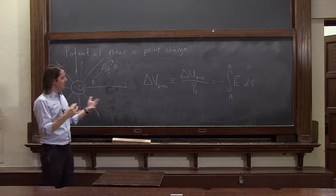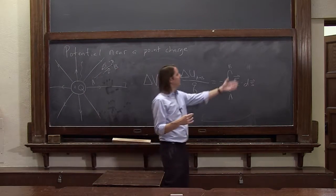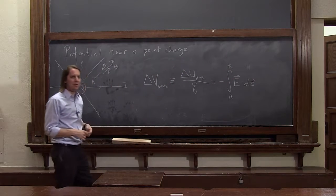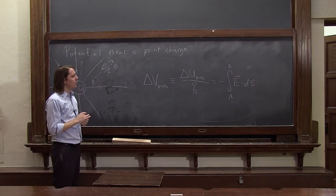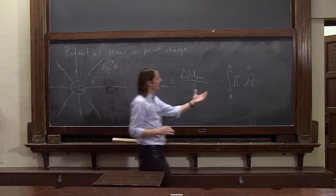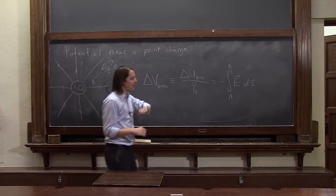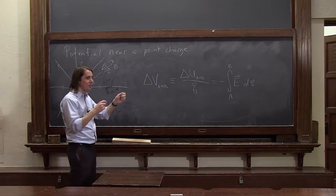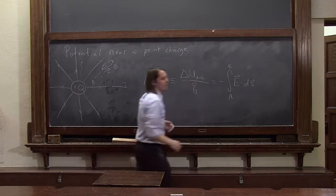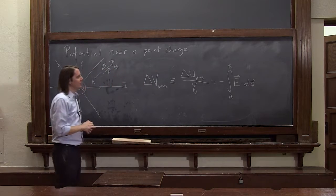This is why, if you're reading a book and the first thing you see is they define the potential this way and you wonder why that negative is there, go through those previous videos. That will walk you through exactly why the negative is there. It's because where this comes from, this E dot dS, comes from the work you're having to do. Either that your external agent is doing or that the field is doing to move things around. That's where the E dot dS comes from, if you think about the potential this way.